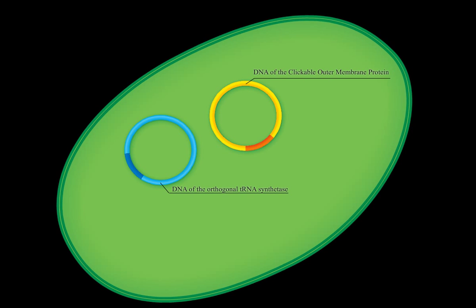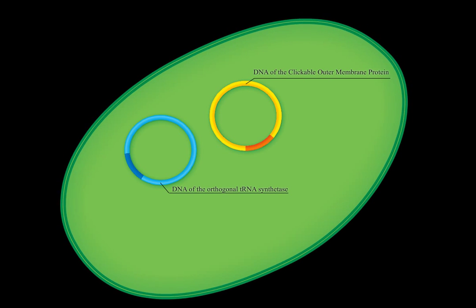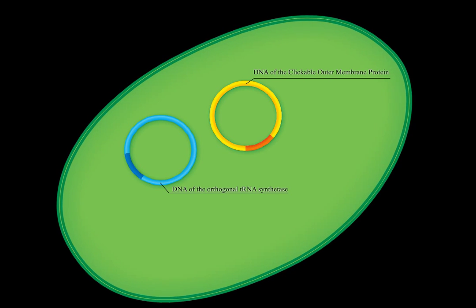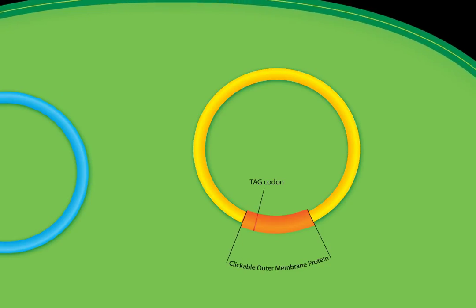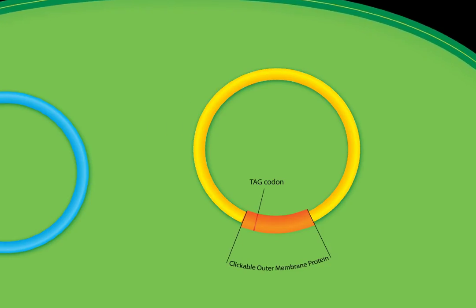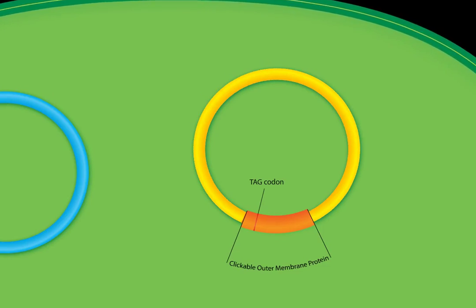The other plasmid, shown in blue, contains the genetic information for an orthogonal tRNA system. In this plasmid, a mutation, TAG, is introduced into the region encoding for the outer membrane protein. This amber stop codon encodes for the non-natural azide containing amino acid PAZF.